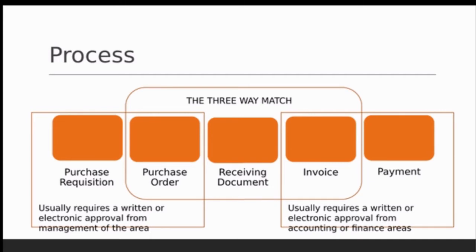After the purchase requisition and purchase order, when those goods come in they're received and there'll be a receiving document related to that. Then the vendor will send an invoice, you'll receive that invoice, and ultimately you'll pay it — as long as everything has matched. That's what the three-way match represents.